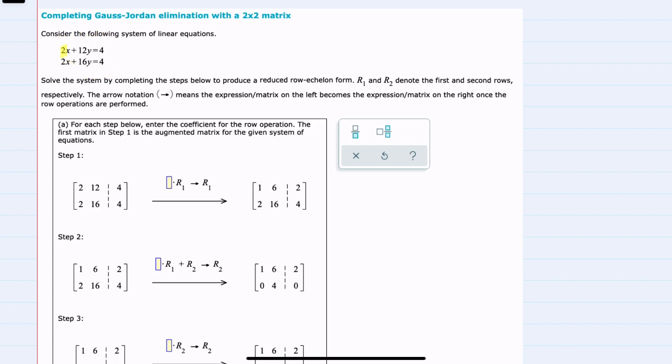You can see that the coefficients in front of the x have been moved into the first column, the coefficients in front of y are in the second column, and the constants on the right-hand side are in this third column. Our process for this elimination is going to be to turn this matrix into the identity matrix, where we have these ones on the diagonal.